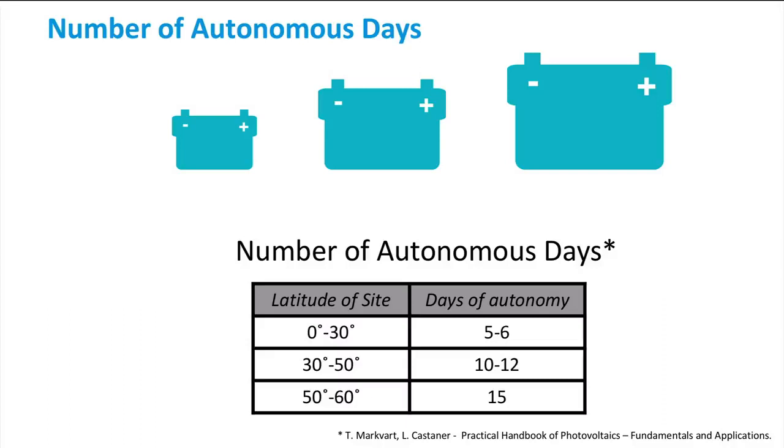This is an obvious correlation as you know that the daily irradiance decreases as you move further away from the equator. Since the latitude is zero at the equator, the number of autonomous days increases with increasing latitude.